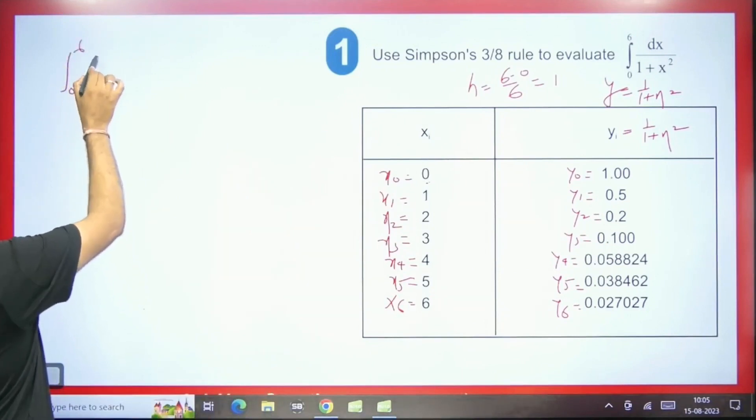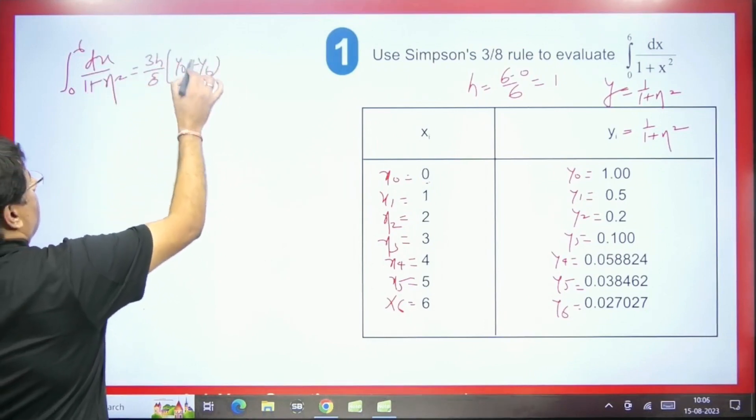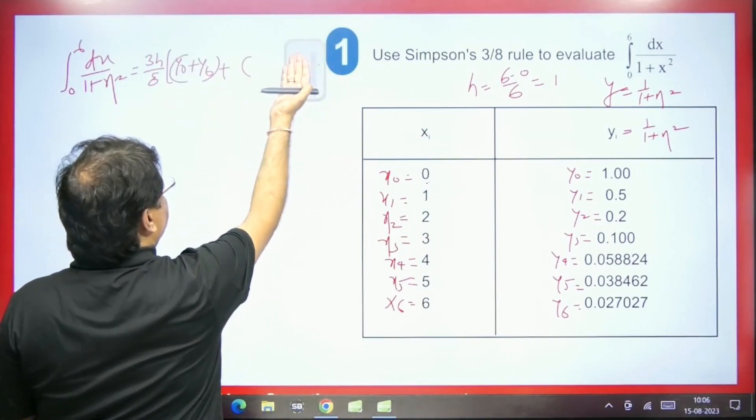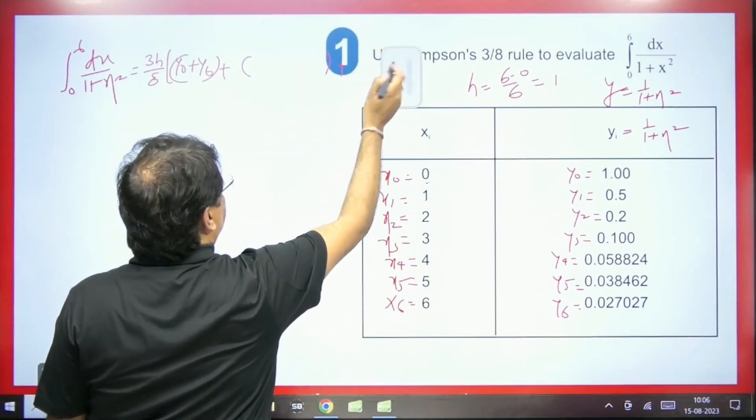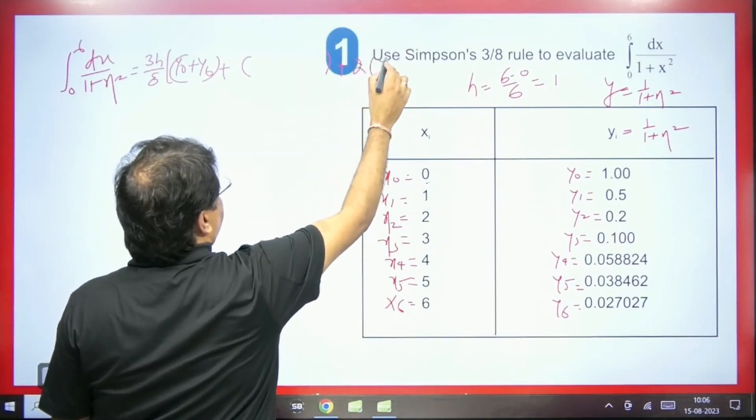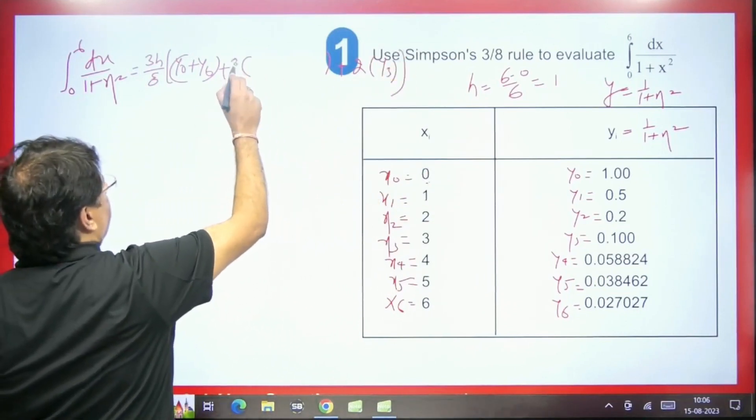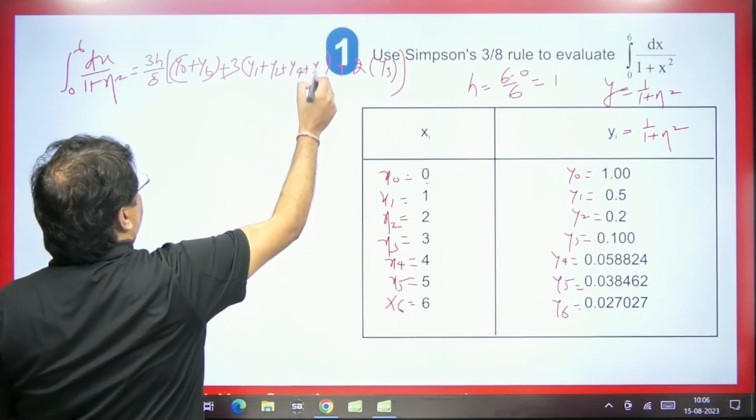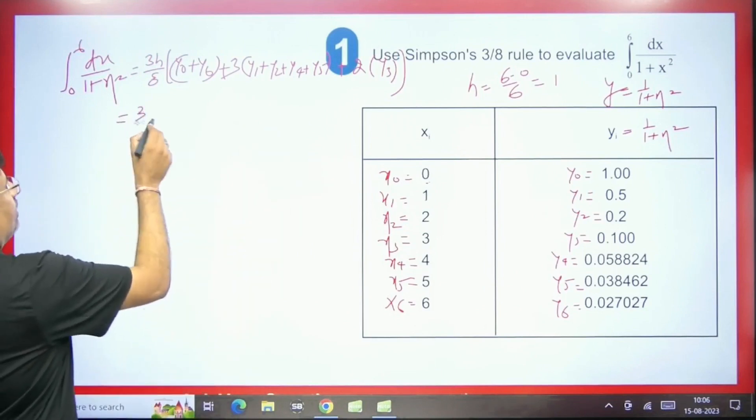So here we will get 0 to 6 dx upon 1 plus x square. Now the formula here will be 3h by 8, first term plus last term. 2 into here, we will have multiple term of 3. One is y3, y6 is taken by us. Now we will write the remaining terms here. It will be 3 into y1, then y2, next is y4 and last y5. We know the value of h here. It is 1. So 3 by 8.